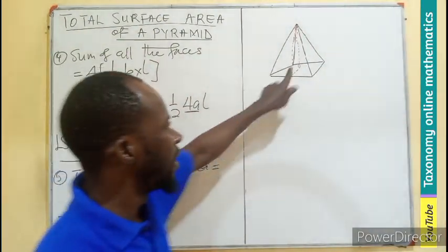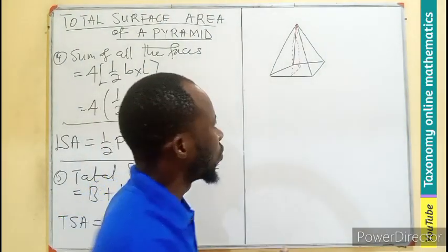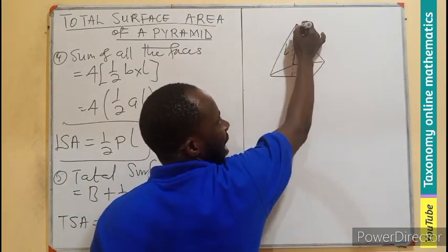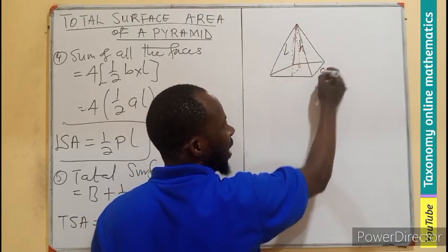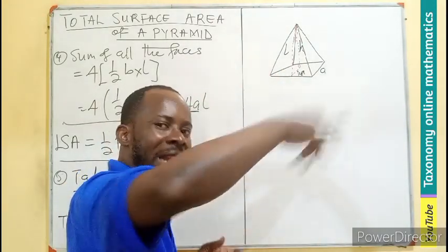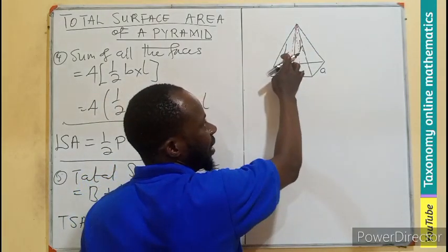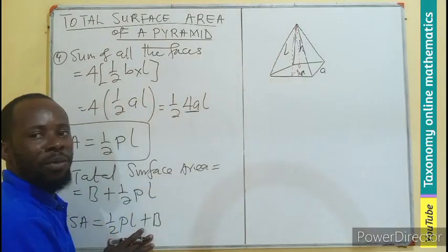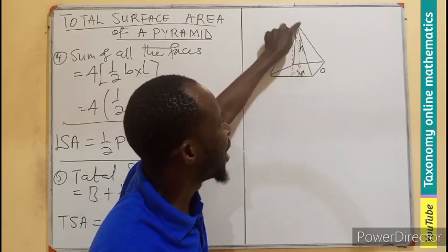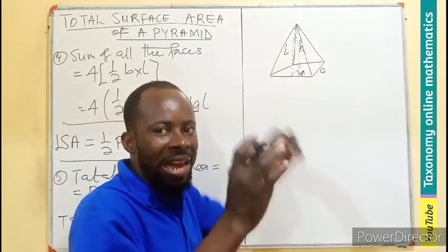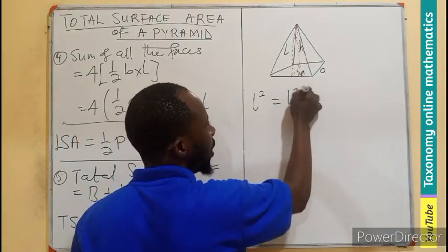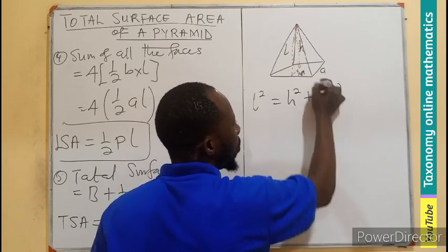Sometimes the slant height may not be given, but we need it in the calculation. We might instead be given the altitude H of the pyramid. The altitude is at the center of the base, so it divides the base edge in half, giving a/2. To find the slant height L, we pick out the right triangle formed by the slant height, half the base (a/2), and the altitude H. Using the Pythagoras theorem: L² = H² + (a/2)².